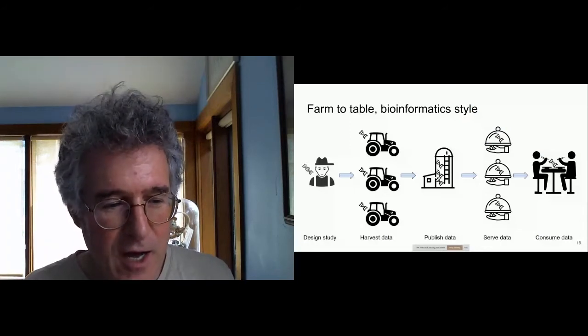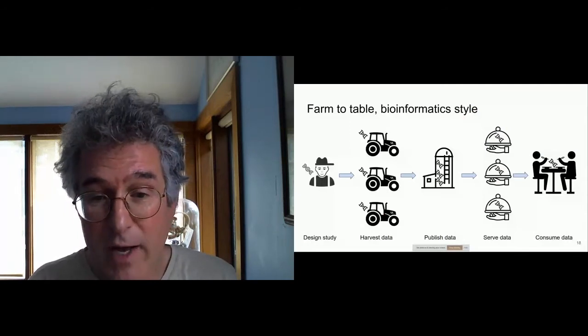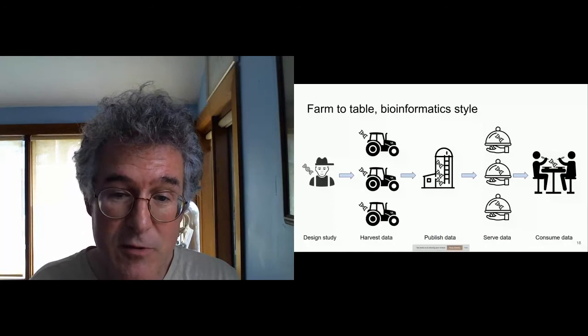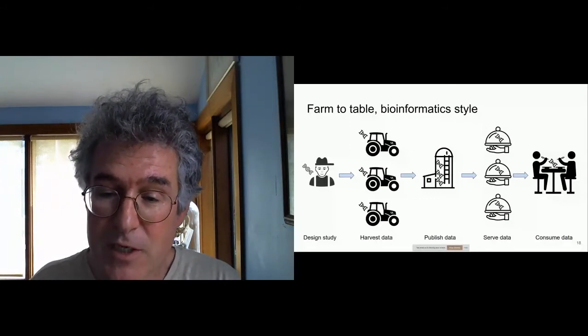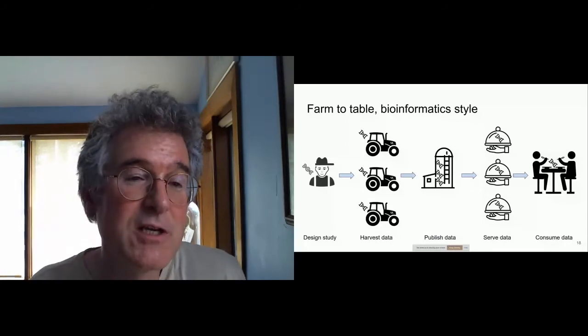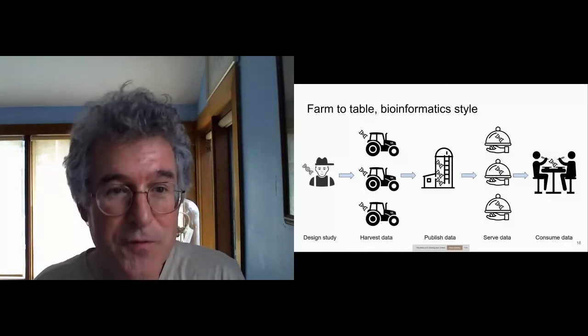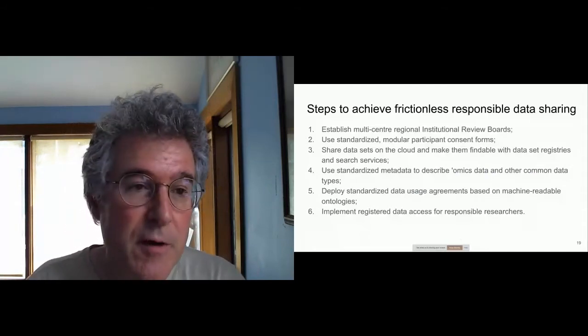Foraging is a very labor-intensive and non-scalable task. How do we go from a foraging model to a farm-to-table model, where there's a group of researchers who design the study, harvest the data in a systematic way, publish it in a well-defined series of data archives, and then a secondary group of bioinformaticians serves the data out to the ultimate consumers? In this talk, I'm going to discuss six different mechanisms to do this.